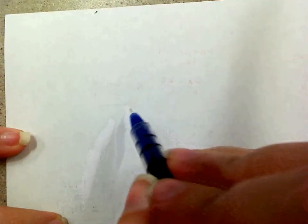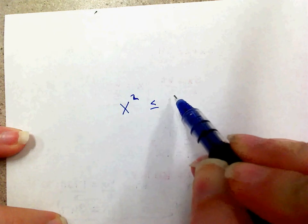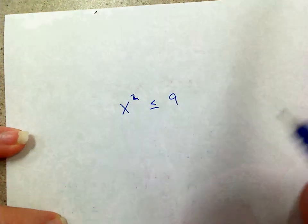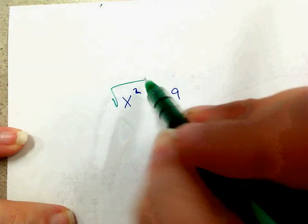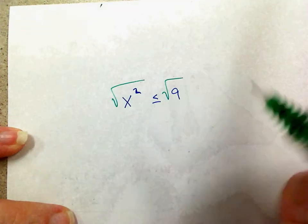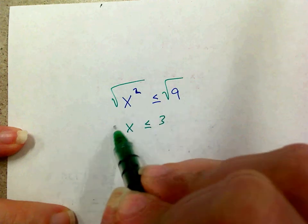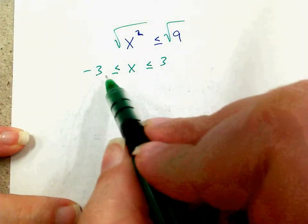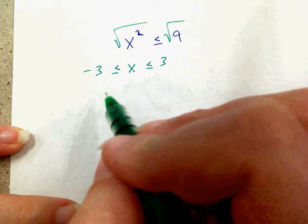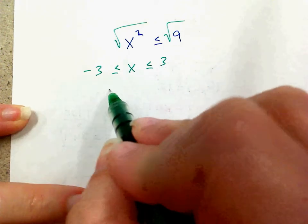Say we want to solve x squared less than or equal to 9. How do you get rid of a square? Square root — but when you square root, you get two answers. So I put the positive on one side, repeat the symbol, and put the negative on the other side. Negative 3 is less than 3 — that makes sense. So my answer is from negative 3 to 3.